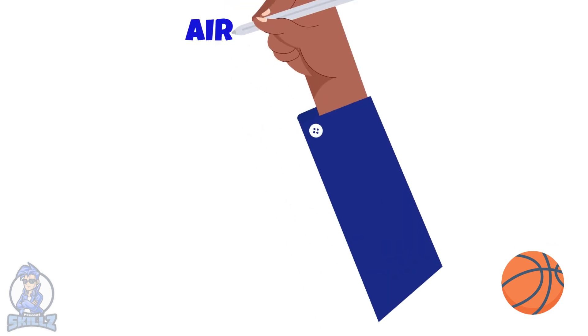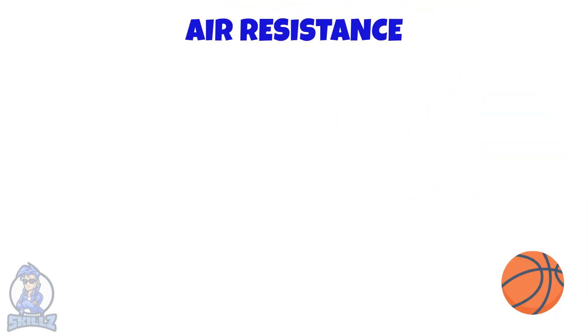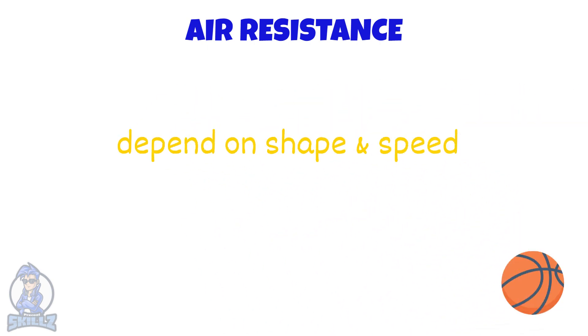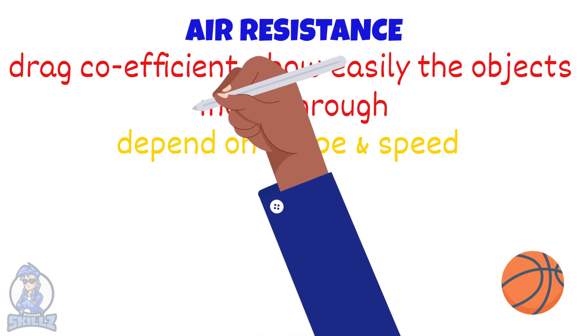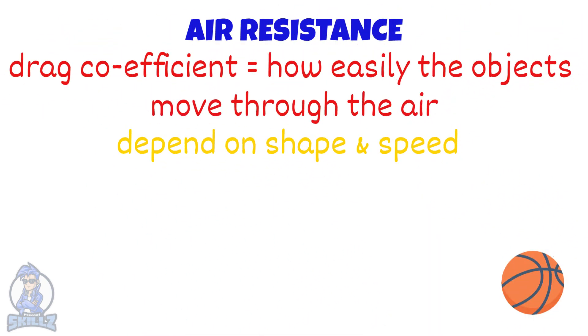If a ball falls from a high place, there will be a force that opposes its movement. This will happen for any object moving through air. The opposing force is called air resistance or drag force. The drag force's size will depend on the shape and the speed of the object. The drag coefficient is a measure of how easily an object moves through the air.